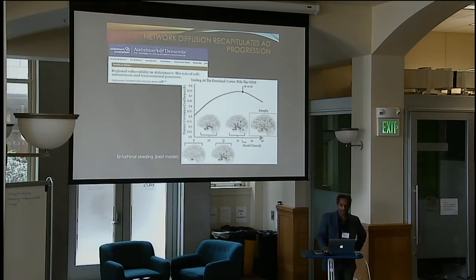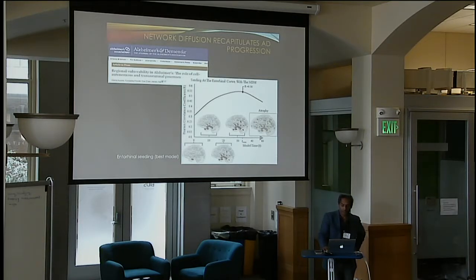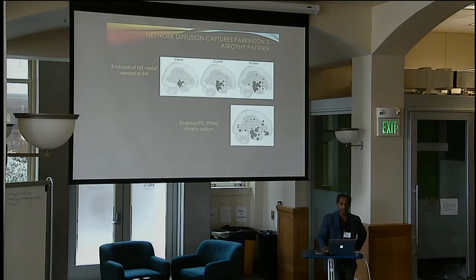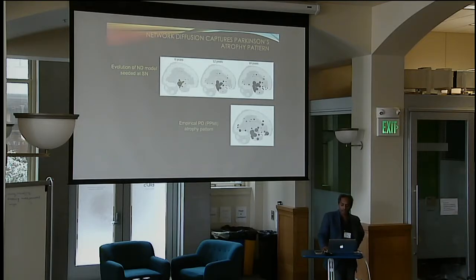We crunched a whole bunch of Alzheimer's data from the ADNI study and showed that if you start in the entorhinal cortex — where tau pathology in Alzheimer's first starts — we're able to recapitulate very nicely the spatiotemporal progression of Alzheimer's, matching well with the atrophy pattern. Because the model doesn't care about what is spreading, it is equally applicable to other pathologies like Parkinson's disease, where it's alpha-synuclein that spreads. Starting from the substantia nigra, the network diffusion model eventually resembles the empirical Parkinson's atrophy pattern from the large PPMI dataset.